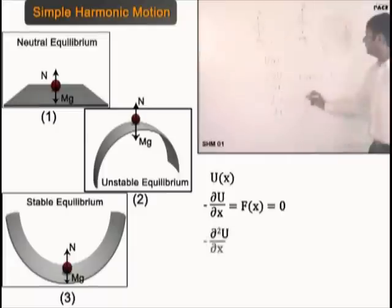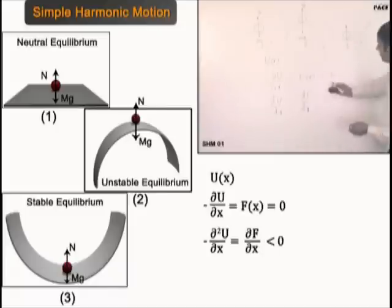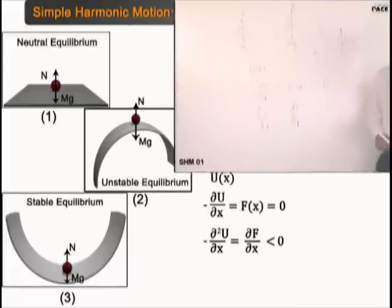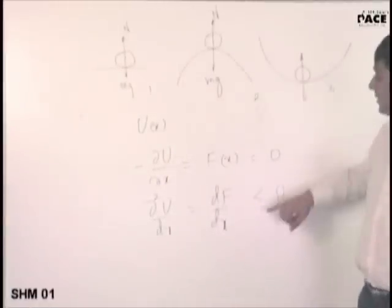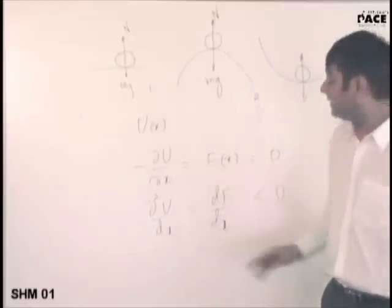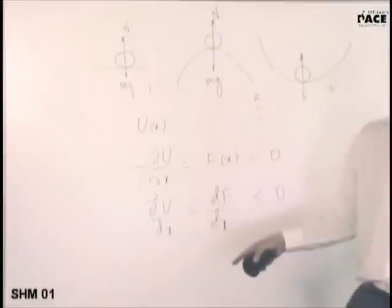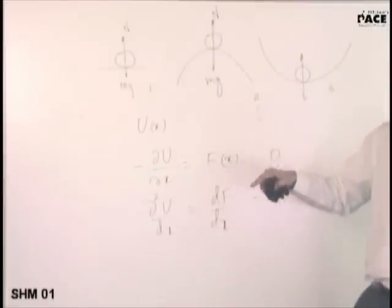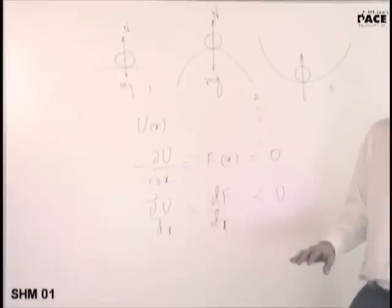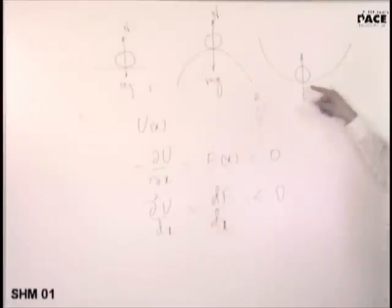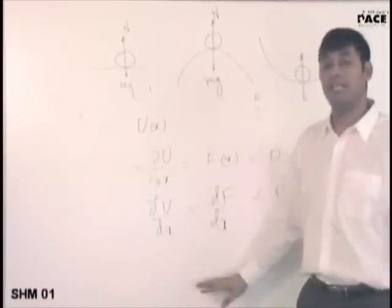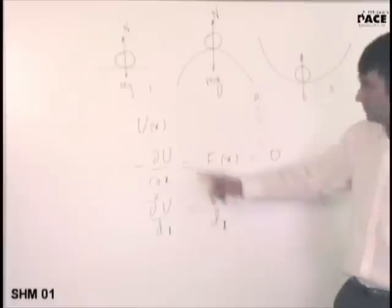If I find the second derivative and test it at the equilibrium position — if the second derivative is less than zero, then it will be an energy maxima. For any function, if the second derivative at that point is negative, the function has a maxima. So potential energy is maxima — that means unstable equilibrium. If the second derivative is positive, it's a minima — that would be stable equilibrium. And if the second derivative is zero, that is neutral equilibrium.